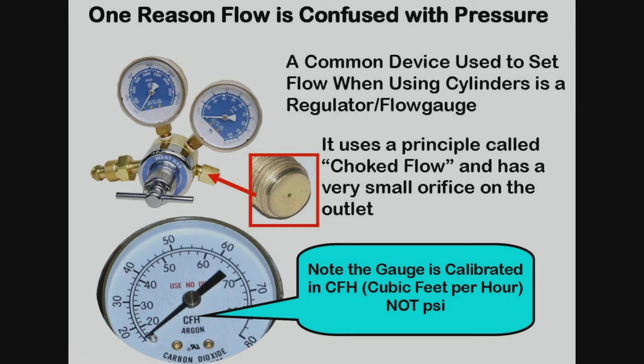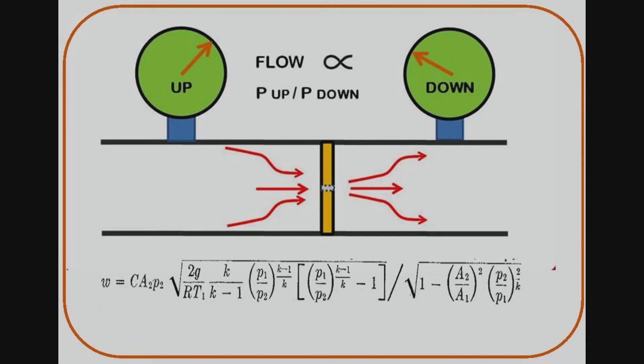A common regulator flow gauge device can cause confusion — it sets pressure above a very small orifice that is actually setting flow rate. Knowing how a regulator flow gauge works helps provide an understanding of shielding gas control and gas waste. If a small orifice or needle valve is placed in the gas delivery hose, the flow will vary depending on the pressure upstream and downstream of the orifice.